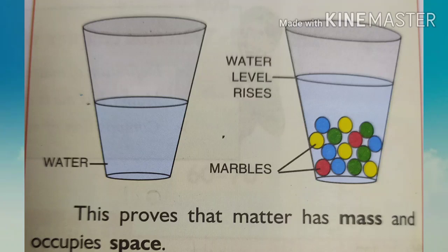The quantity of matter that a body contains is known as its mass. The space occupied by a body is called its volume.